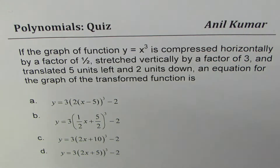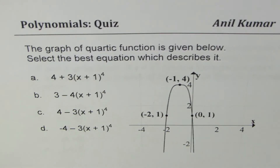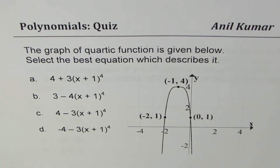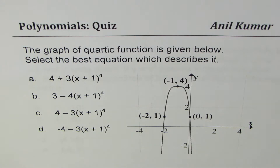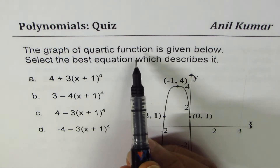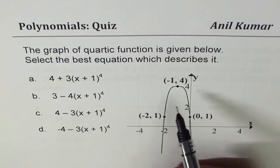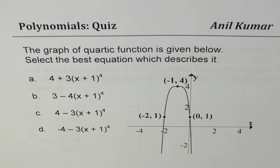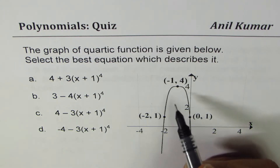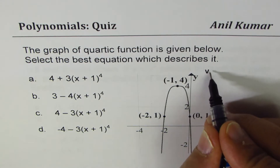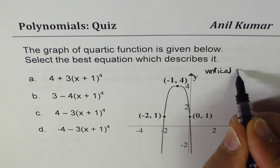Let's go back to the very first question and see how to answer it. This is the first one — we're talking about the graph of a quartic function which is given here. It is transformed, and we have to match the equation with the graph. Whenever you have a graph like this, the things you should note are the transformations. We do have a vertical transformation — it is a vertical reflection.